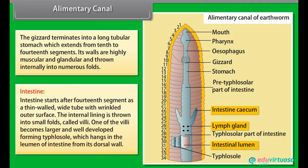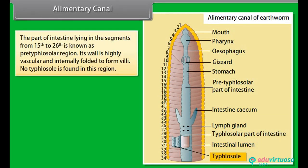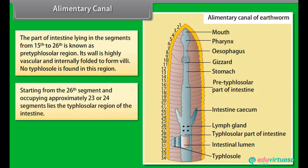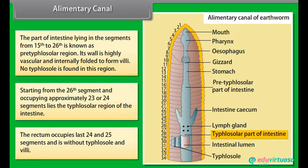The intestine starts after the fourteenth segment as a thin-walled white tube with wrinkled outer surface. The internal lining is thrown into small folds called villi. One of the villi becomes larger and well-developed, forming the typhlosole, which hangs in the lumen of the intestine from its dorsal wall. The part of intestine in segments 15 to 26 is known as the pre-typhlosolar region. Starting from the 26th segment and occupying approximately 23-24 segments lies the typhlosolar region. The rectum occupies the last 24-25 segments and is without typhlosole and villi.